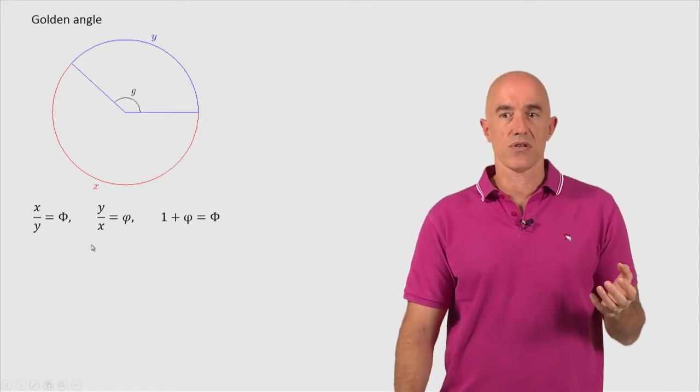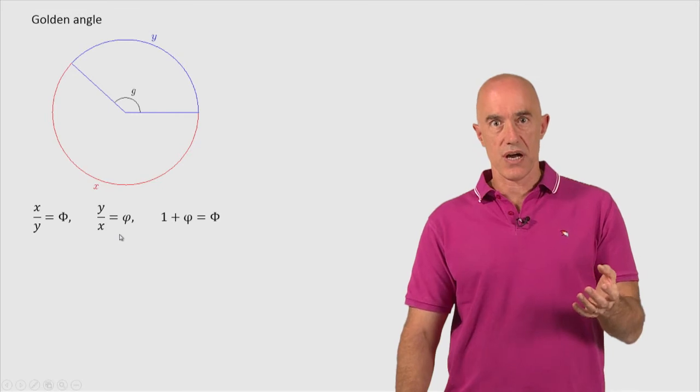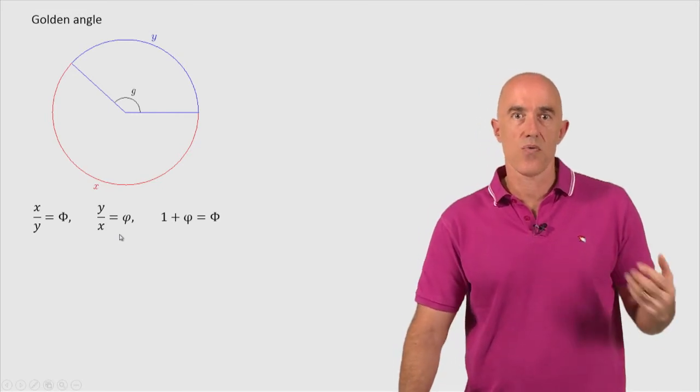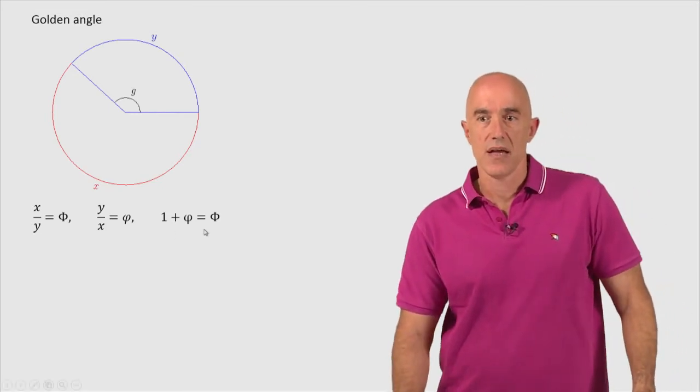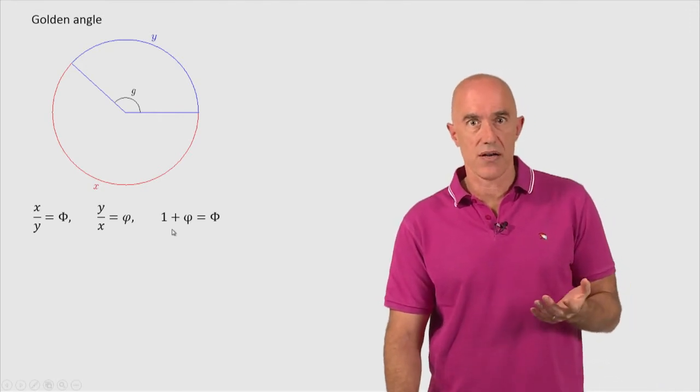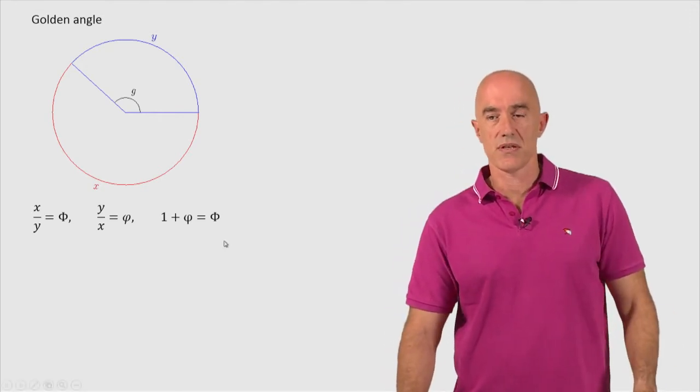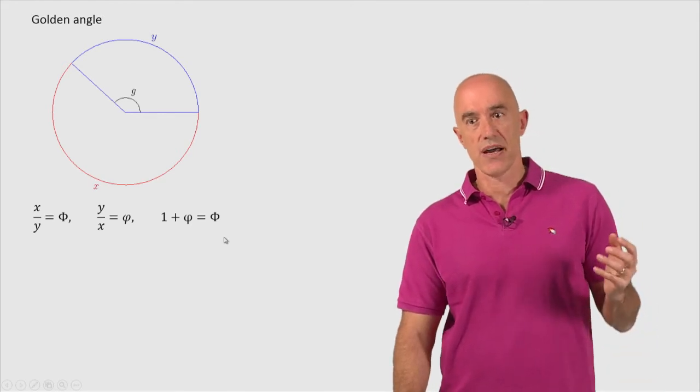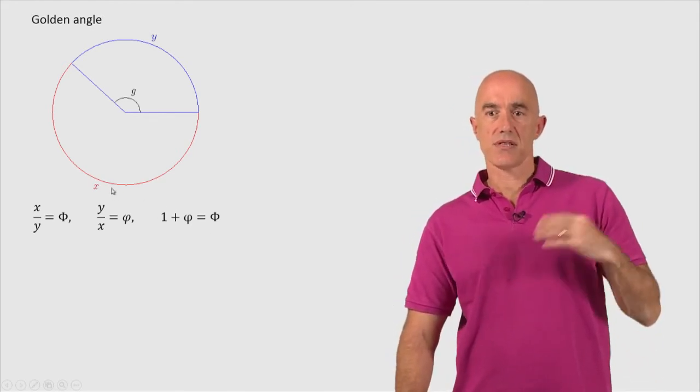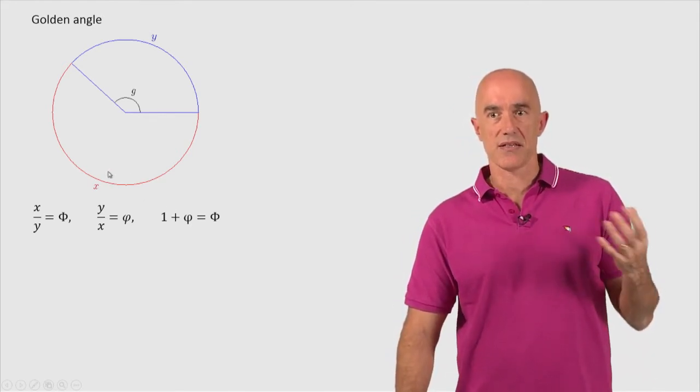The reciprocal of the golden ratio is the golden ratio conjugate little phi, so y over x is little phi. And little phi is just the fractional part of big Phi, so 1 plus little phi equals big Phi. So that gives us the relationships between x and y.